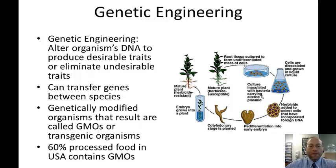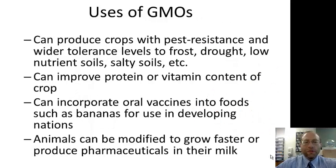Here are some uses of GMOs. They can produce crops with pest resistance and wider tolerance to frost, drought, low-nutrient soils, and salty soils—valuable not just in developed countries but also in developing countries. GMOs can improve the protein or vitamin content of a crop. They can incorporate oral vaccines into foods such as bananas for use in developing nations—imagine getting vaccinated for measles by eating a bag of potato chips instead of getting a shot. Animals can also be modified to grow faster or produce pharmaceuticals in their milk.